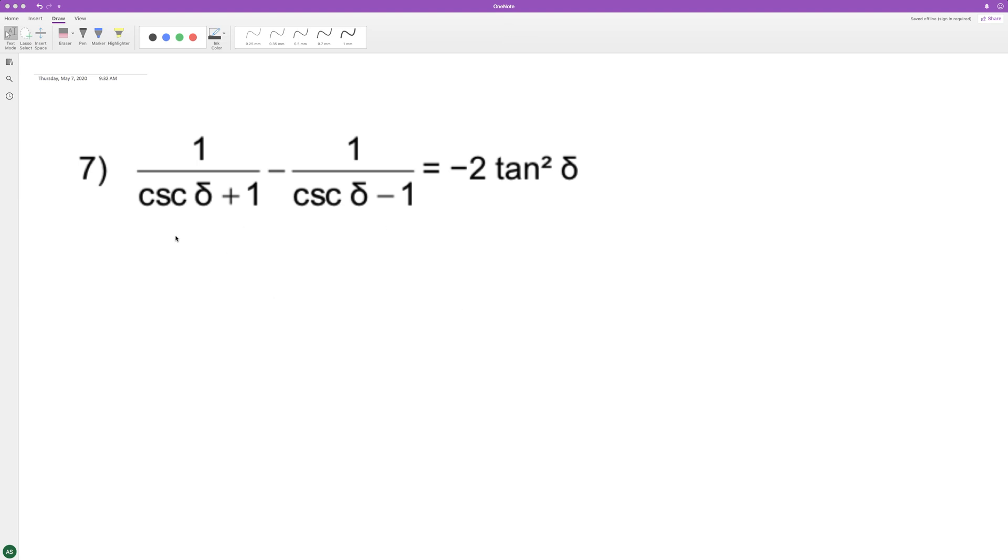Let's get a common denominator of cosecant squared theta. In the numerator, I'm just gonna use theta, and this becomes minus one because you distribute the minus.